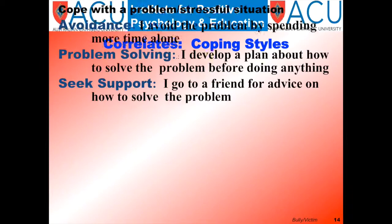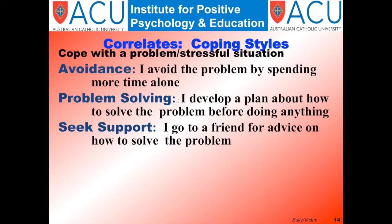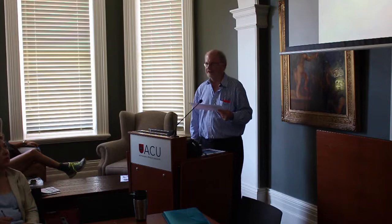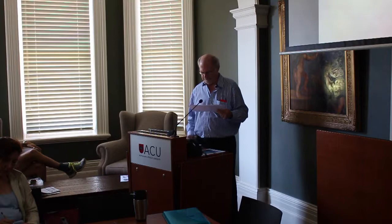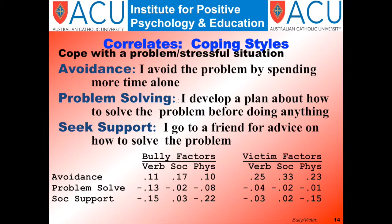Now we're looking at three coping styles: avoidance, problem solving, or seeking support. These were general strategies that people use for coping, not specific to the bullying situation. Bullies were more likely to use avoidance coping strategies and less likely to use problem solving or seeking social support. Victims were even more likely to use avoidance than bullies. Bullies and victims tended to be surprisingly similar in relation to these coping styles.